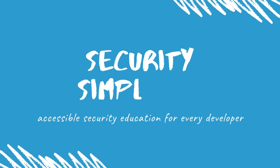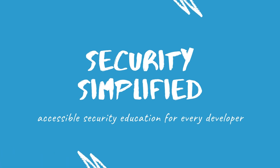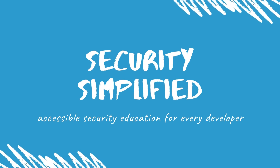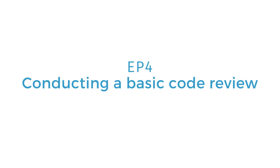Welcome back to Security Simplified. Performing a source code review is one of the best ways to find security issues and vulnerabilities in an application. But how exactly do you do it? Today, let's establish a basic framework that you can use to analyze your code to find security vulnerabilities.